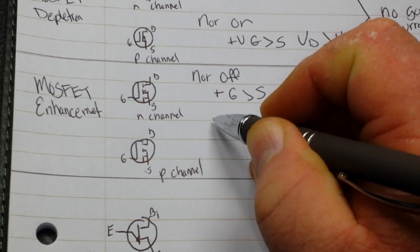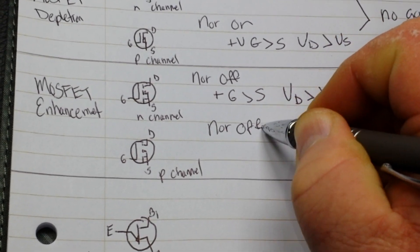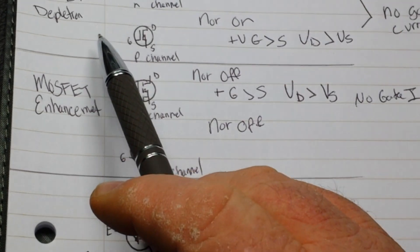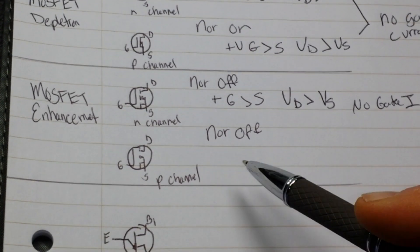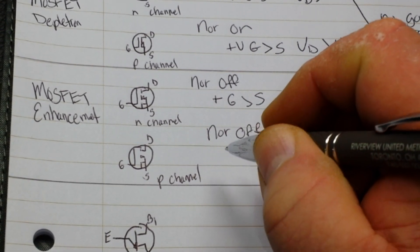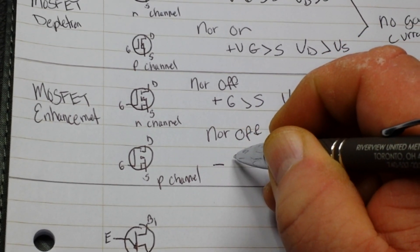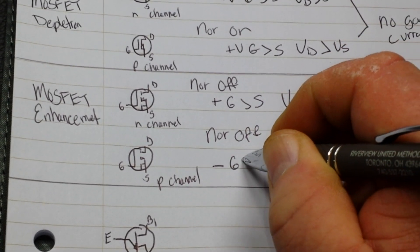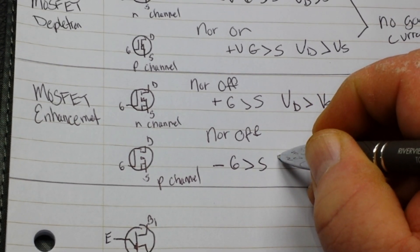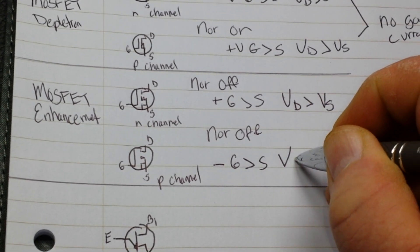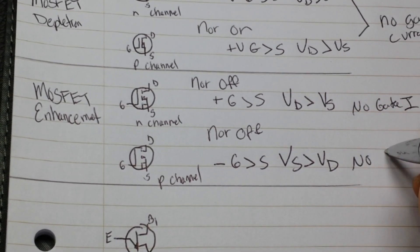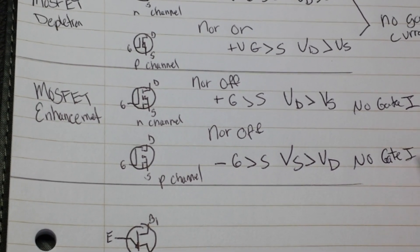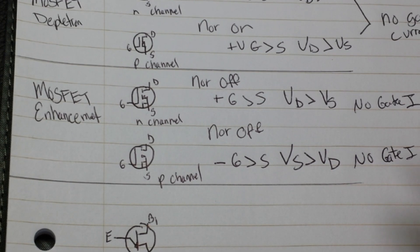Our P channel is, of course, normally off. You can see the difference for your depletion mode MOSFETs are normally on. Your enhancement modes are normally off. Anyway, a small negative voltage at the gate relative to the source turns it on. Operates VS greater than VD and no gate current required. Again, switching and amplification applications.